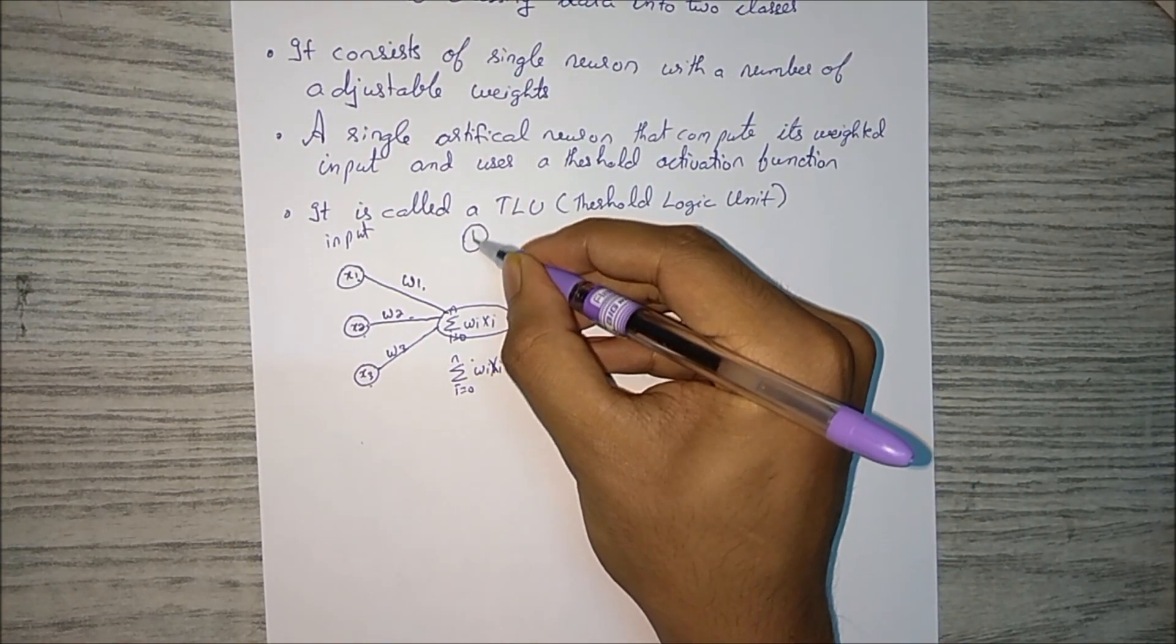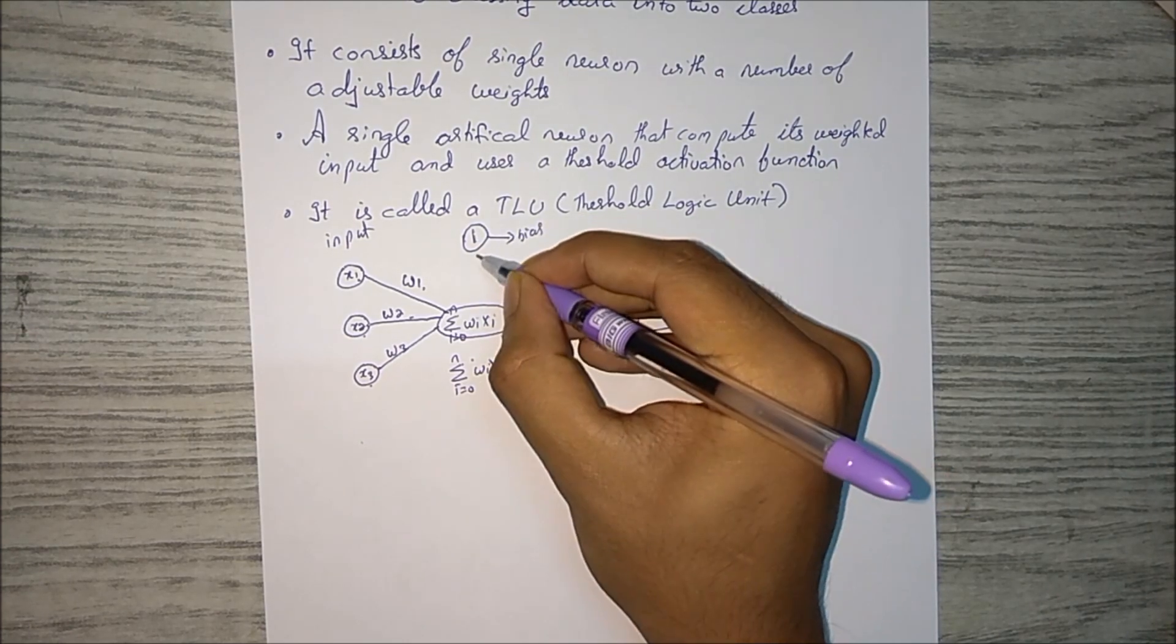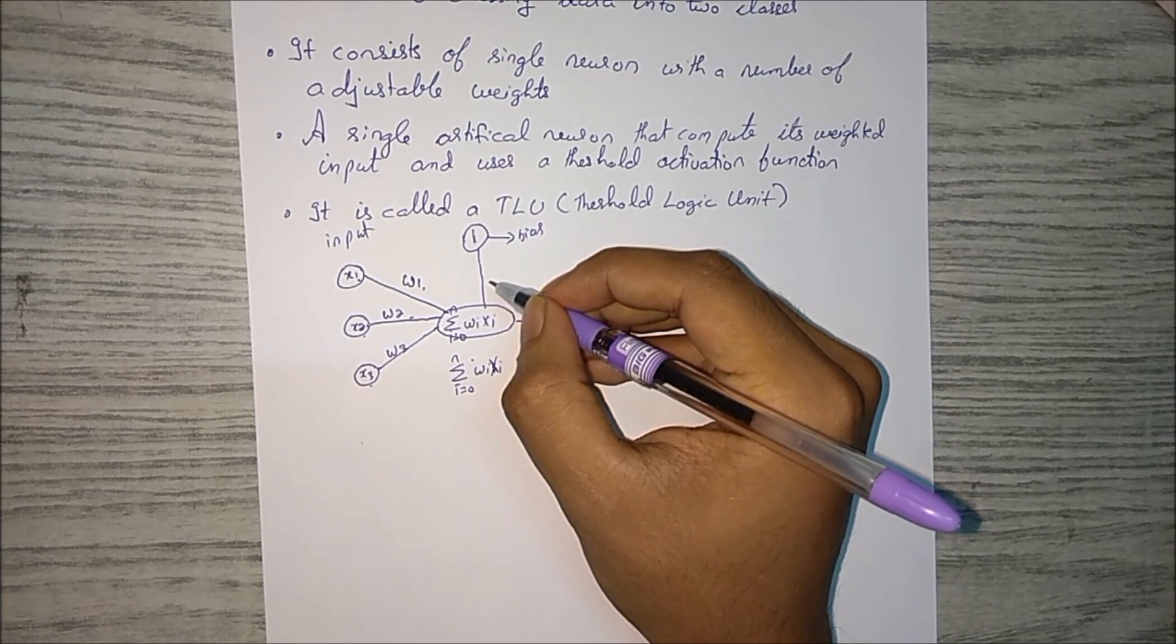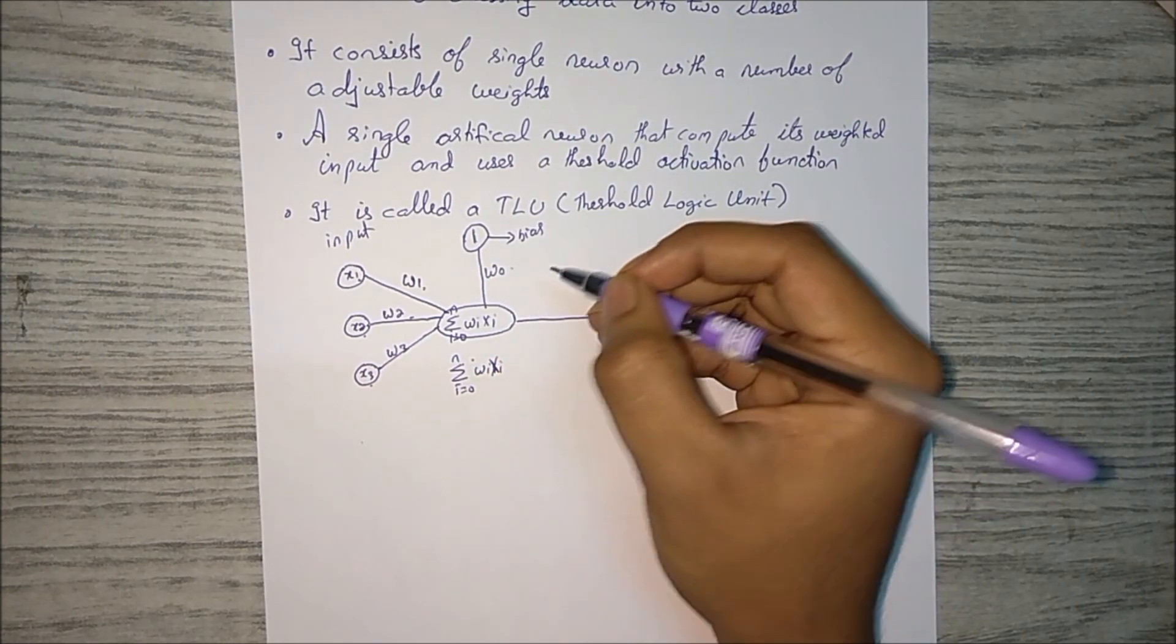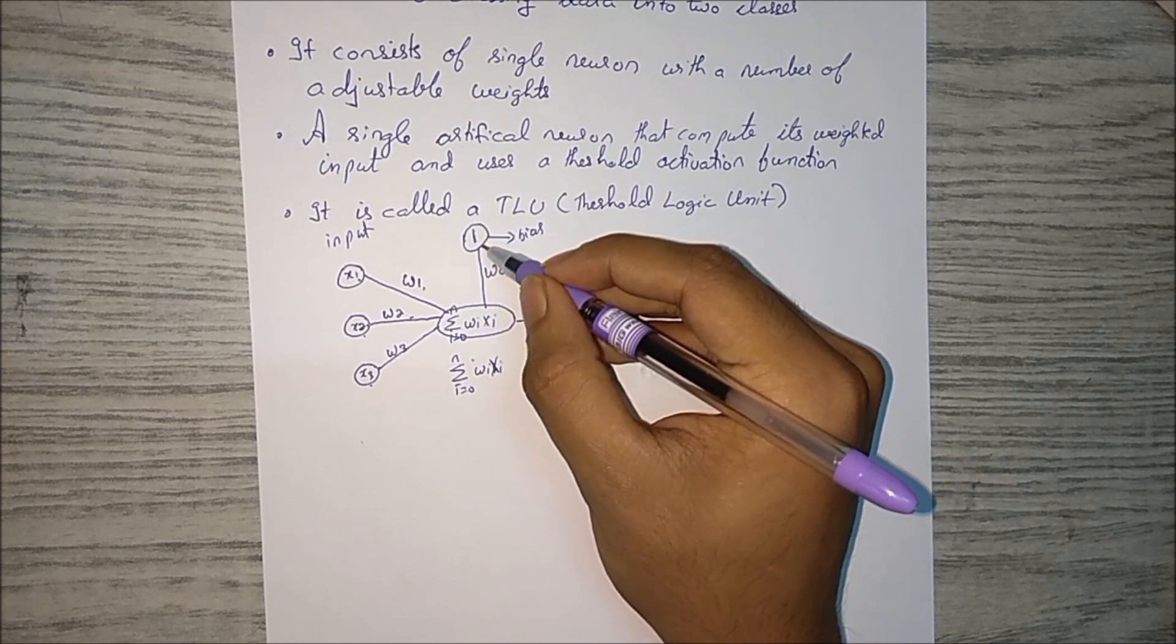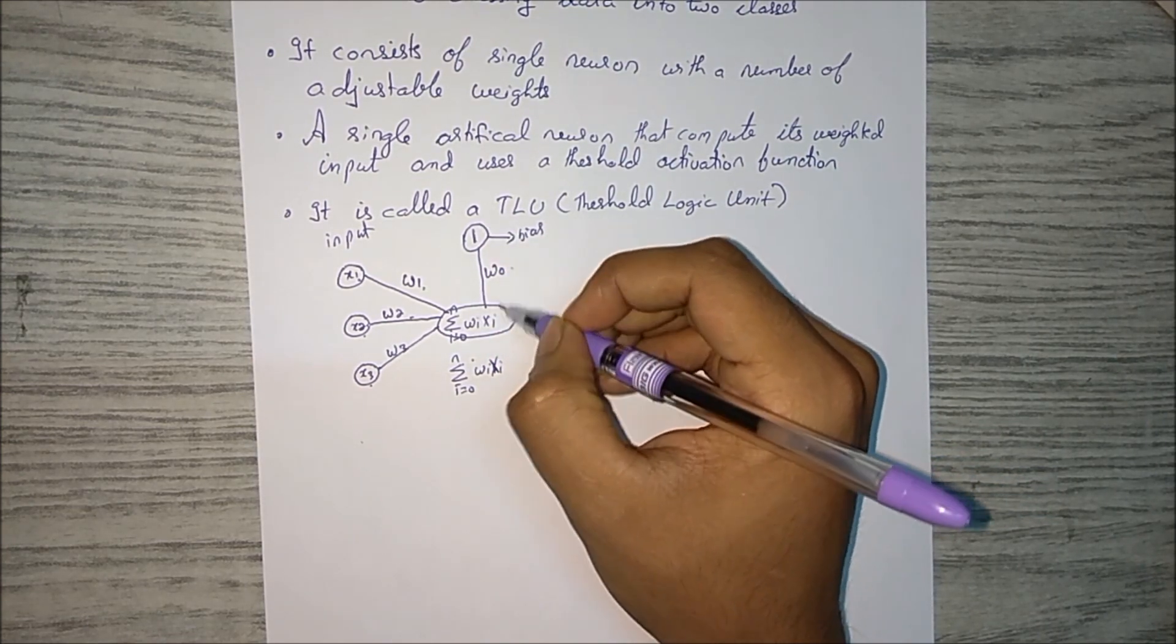And one more thing we have - something called bias. Bias is always one. This is bias and it has one weight and that weight will be w0. So what bias does is: if bias is zero, this thing won't work. If bias is one, then this thing will work.